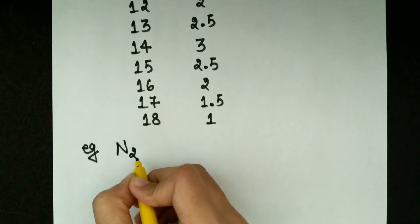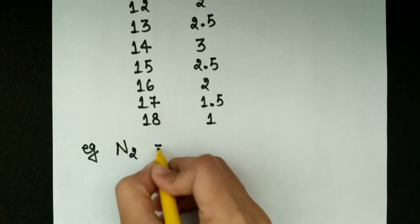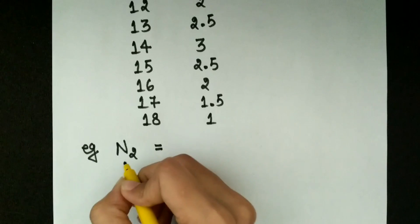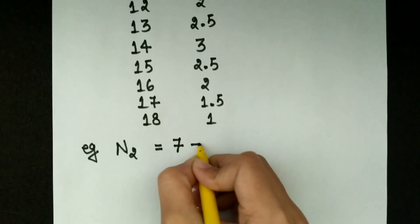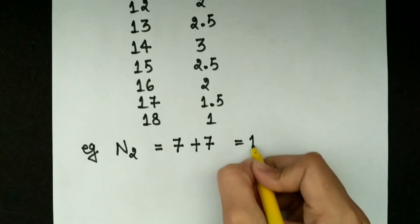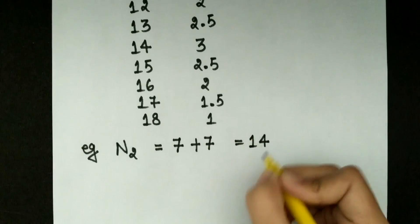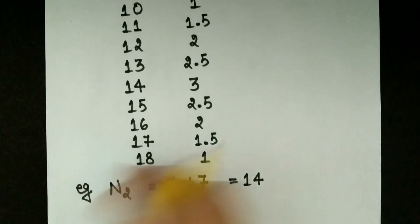N2, that is nitrogen. So we have 2 atoms of nitrogen. As we know, 1 atom of nitrogen contains 7 electrons. So firstly write 7, and again add 7. So as a sum we have 14. So its bond order is 3.